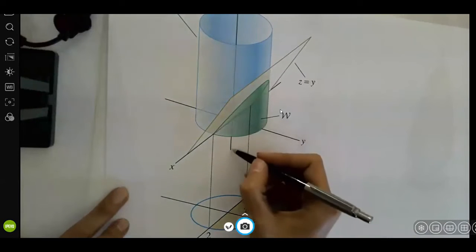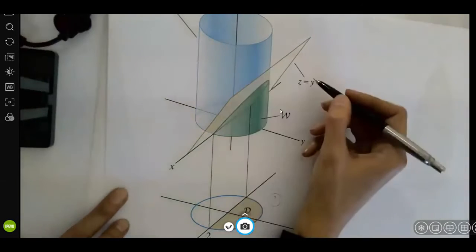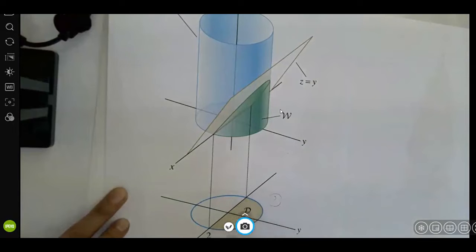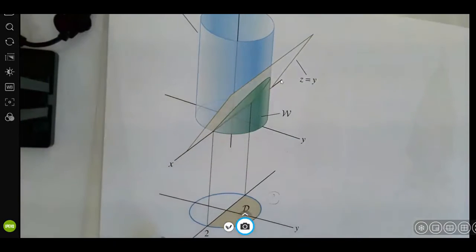It's obvious z is bounded between 0 and y. We don't have any problem with z. We want to know how to identify this region and find the boundaries.